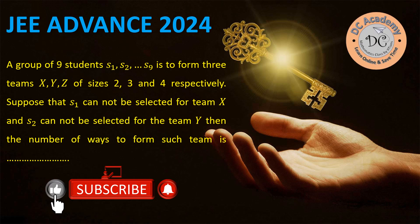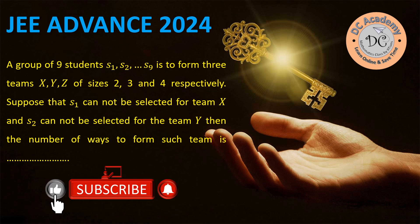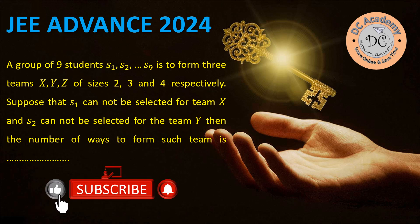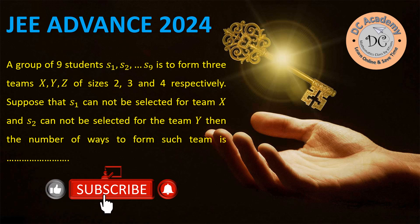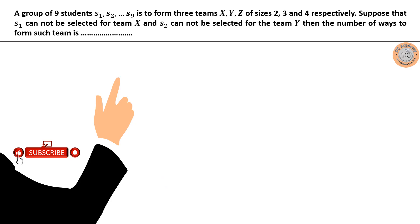In this video we're going to solve a problem from permutation and combination which appeared in JEE Advanced 2024. A group of nine students S1 to S9 is to be formed into three teams X, Y, Z of size two, three, and four respectively. S1 cannot be selected for team X and S2 cannot be in team Y. We have to find how many ways such teams can be formed.